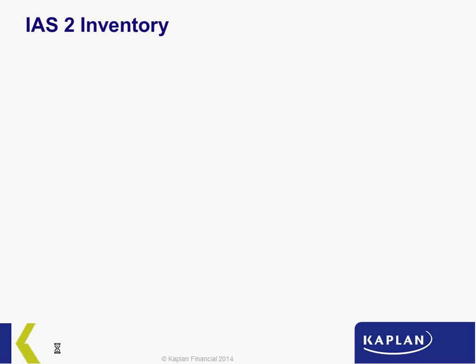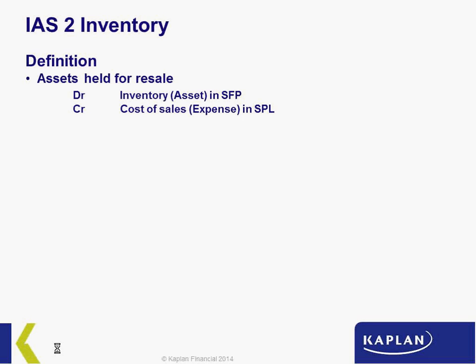Although it has been modified slightly over the years, IAS 2 actually first originated in 1975 — nearly 50 years old. So the definition of inventories: inventories are assets that are held for resale in the normal course of business. They are therefore the goods that we are in business to buy and sell.